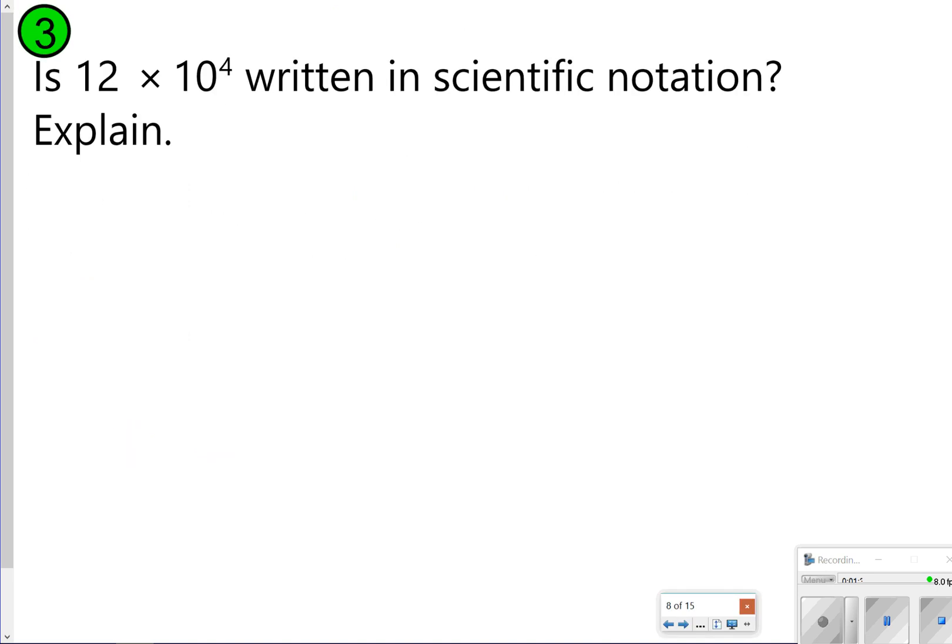Number 3 is 12 times 10 to the 4th written in scientific notation, explain. So again, we're going to pause this one and try it, and then once you're done, click play to check your work. So number 3 is not written in scientific notation, because 12 is greater than 10.